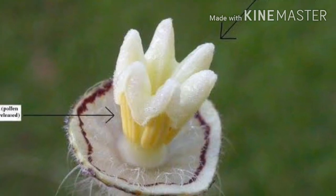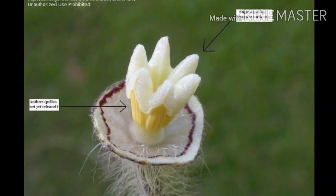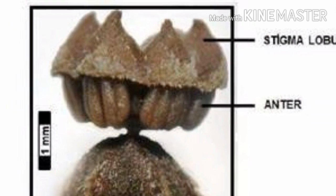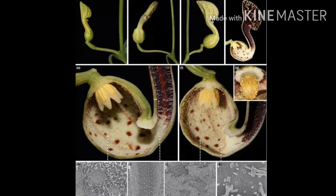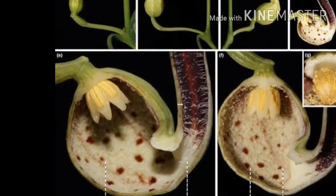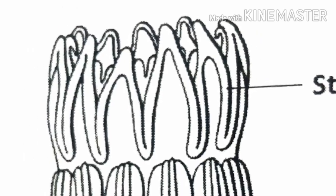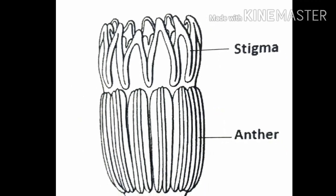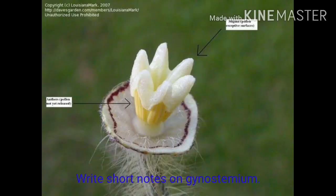Gynostemium is a reproductive structure derived from the fusion of stamen and pistil into a single organ. In this, the style and stigma of the pistil fuse with the filaments and one or more anthers — all are united. That is, the pistil consisting of style and stigma fuses with the filaments and anthers to form a column. This structure together is called the gynostemium.